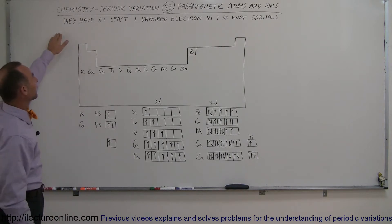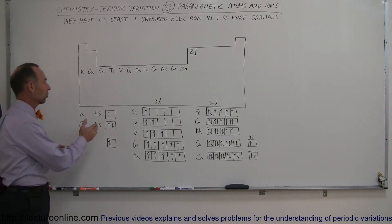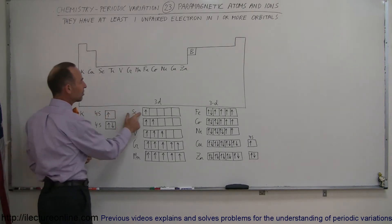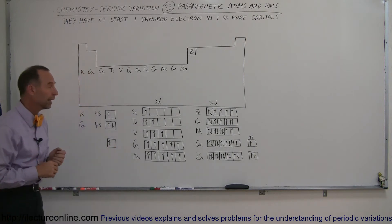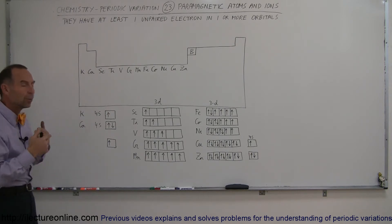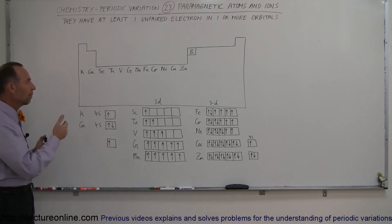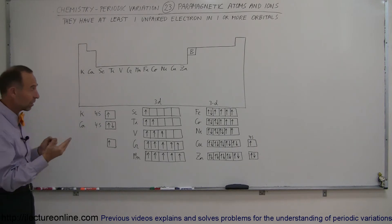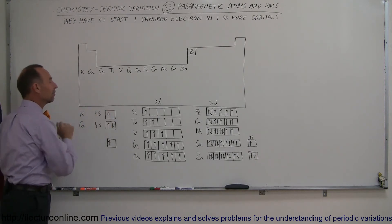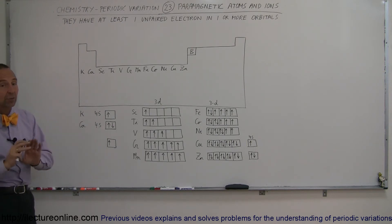are such that they have at least one unpaired electron in one or more orbitals. Whenever you have a situation where there's a single electron in an orbital, like for potassium in the 4S orbital or for scandium in the 3D orbital, the atom is subject to outside magnetic fields. So whenever we put a magnetic field onto a paramagnetic atom, there will be an interaction between the magnetic field of the single electron and the magnetic field from outside sources, and that interaction can sometimes be measured.